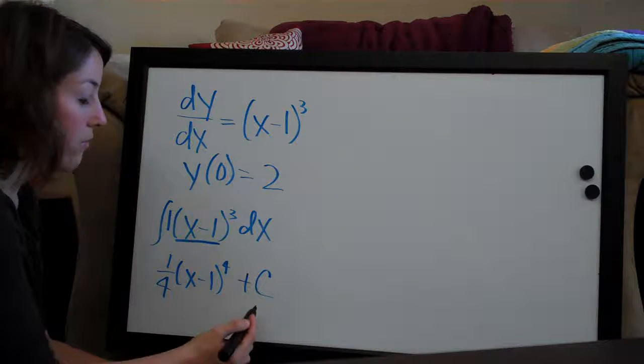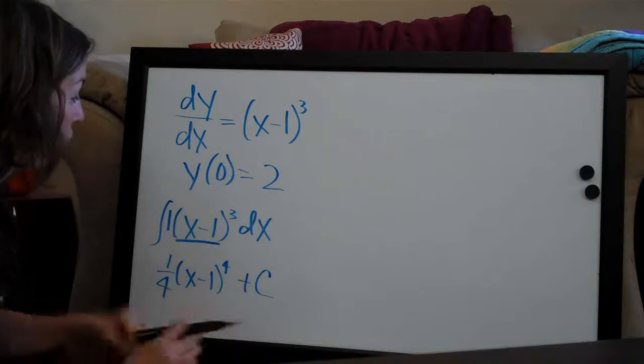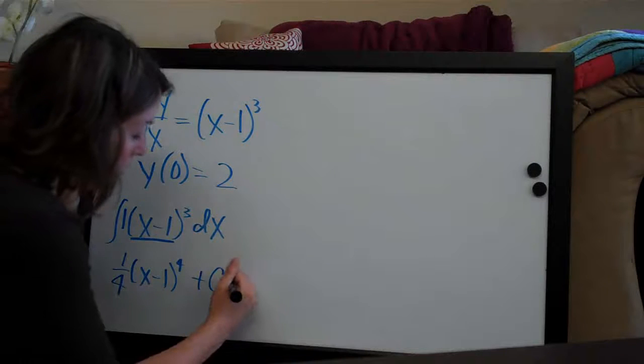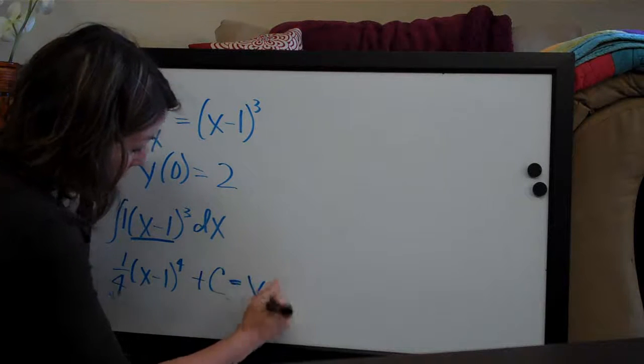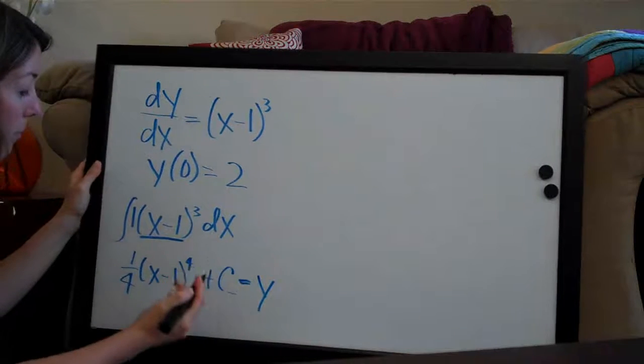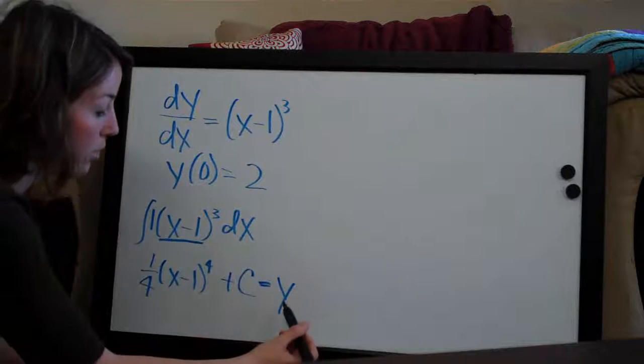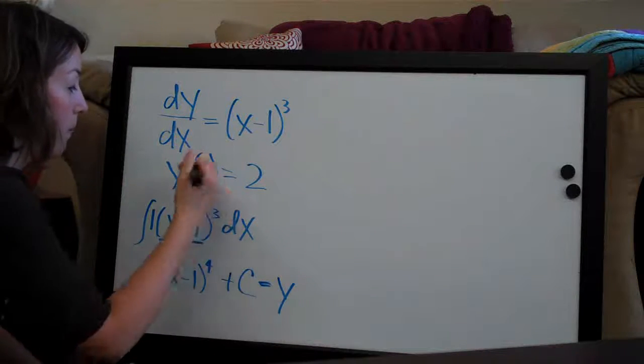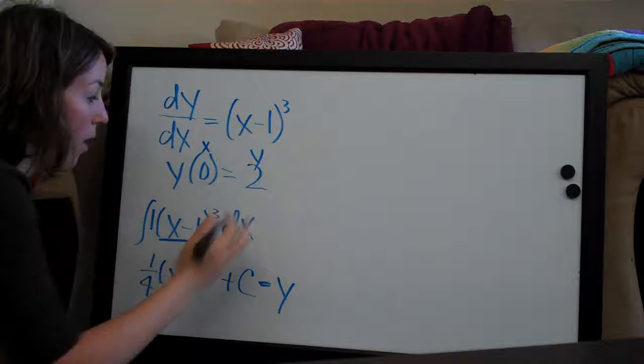So now that we've gotten the integral, we go ahead and apply the initial condition. And remember, this always equals y whenever we have initial value problems. The way you can remember that is because when you go ahead and apply the initial condition, you're going to plug this in for x and this in for y.